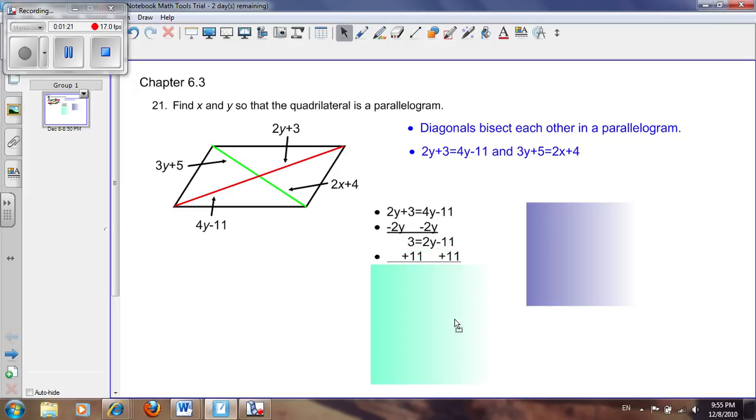Then we add 11 to both sides and get 14 equals 2y. Now we divide by 2 on both sides and get y equals 7. That's our answer for this equation.